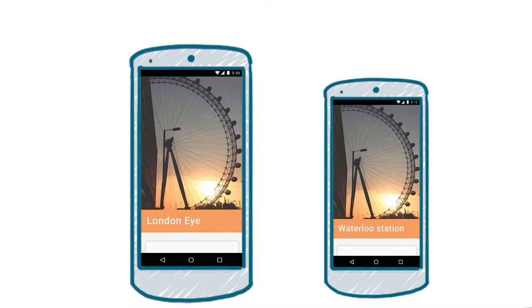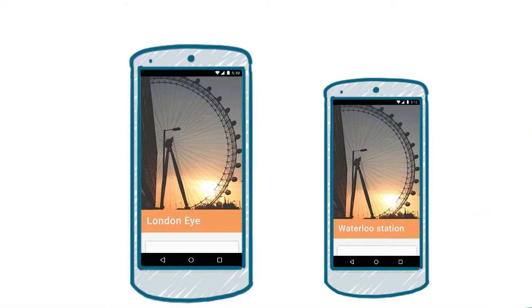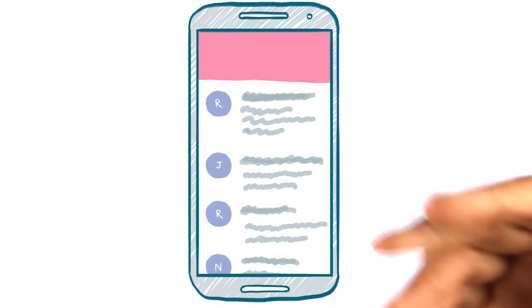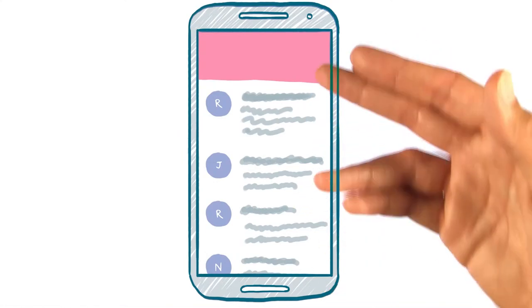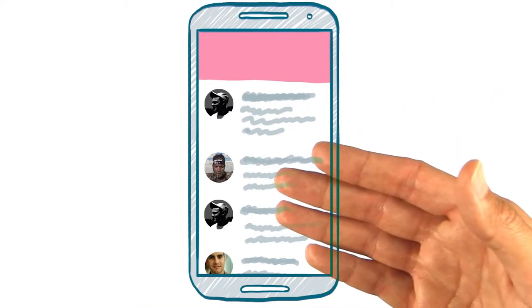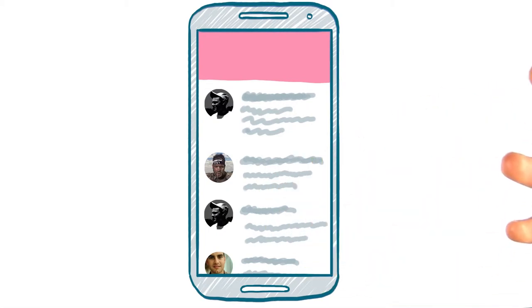But if you're showing information about another place — here Waterloo Station, which is near the London Eye but not the same place — then the image doesn't connect in the same way and it feels off. As another example, if I'm showing content from other people, like this messaging type app, then showing a photo of the contact immediately communicates far better than a label or generic graphic might.